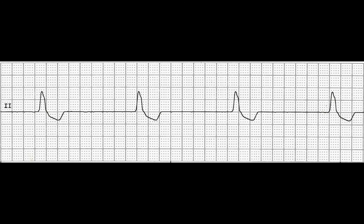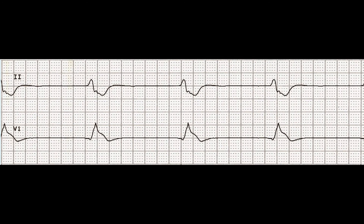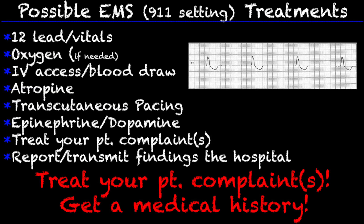Quickly taking a look at this, you can see they're very wide and it's a slow rhythm — that's one example of an idioventricular rhythm. The second example is also wide and also very slow. This could be from a ROSC patient. This is also an example of an idioventricular rhythm — very wide, very slow.